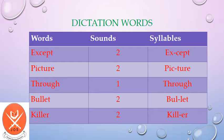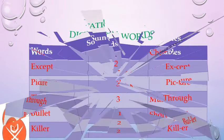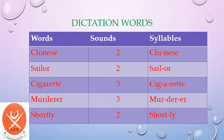Next word is 'bullet' — it has two sounds and two syllables: bullet. Next word is 'killer' — it has two sounds and two syllables: killer. These are the next dictation words from 36 to 40.